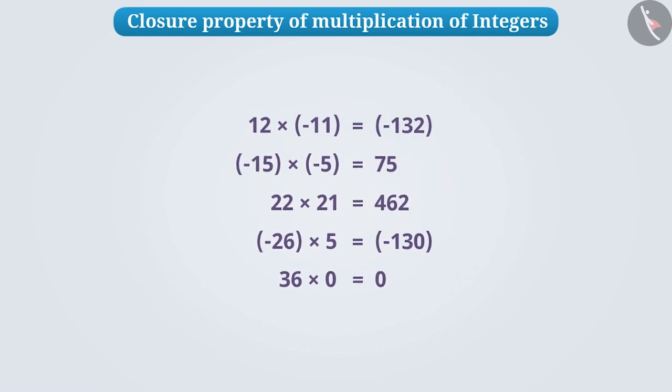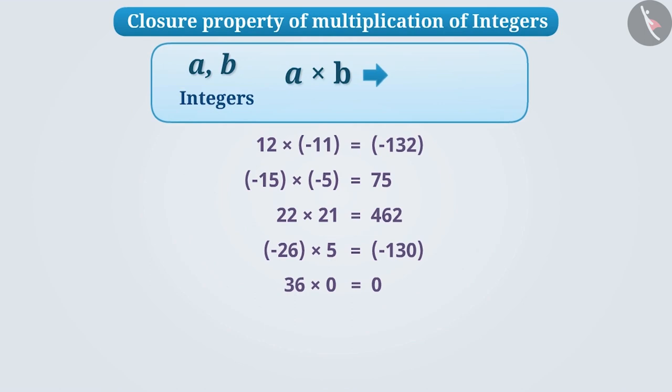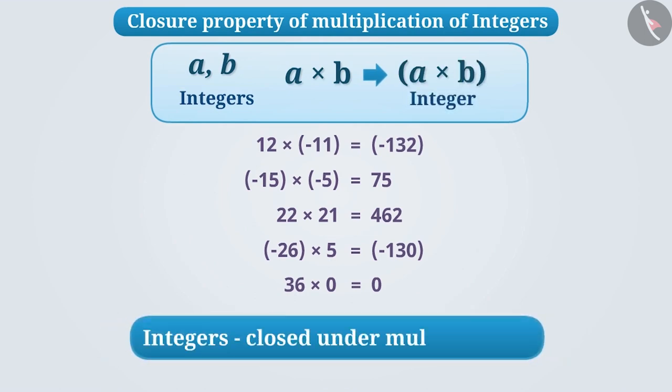Broadly, the product obtained by multiplying any two integers a and b are also integers. Therefore, it is also closed under multiplication.